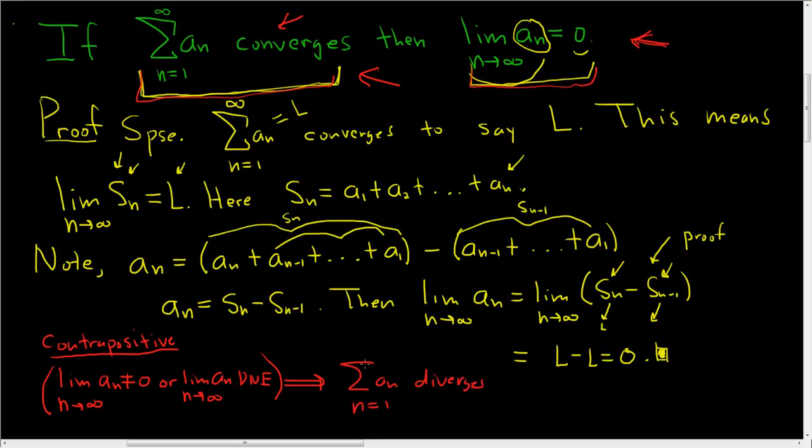So let's go over that again, because the contrapositive is an important idea in mathematics. So our statement said that, let me use a different color, if this was true, then this is true. The contrapositive says if this is not true, then this is not true. So what does it mean for this not to be true? It means this. What does it mean for this not to be true? It means diverges.